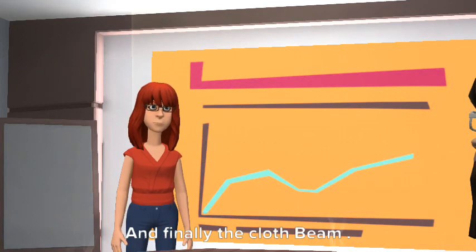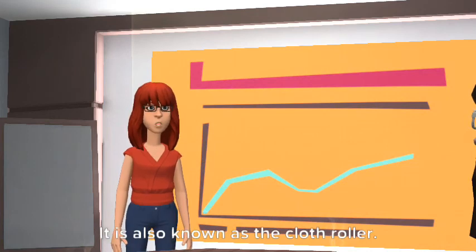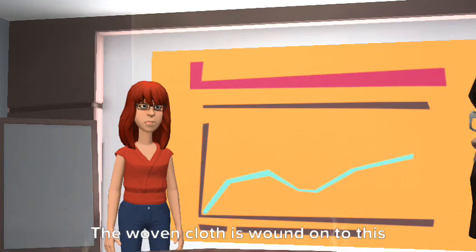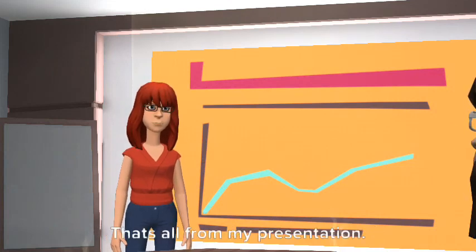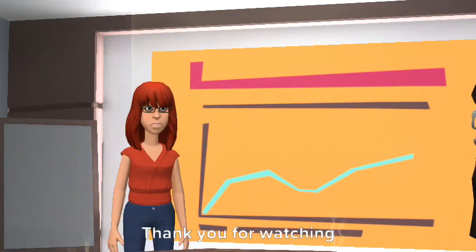And finally the cloth beam. It is also known as the cloth roller. The woven cloth is wound onto this roller. This roller is placed below the front rest. That's all from my presentation. Thank you for watching.